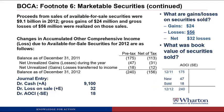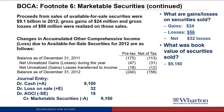Now that we have the debit to AOCI, we are only missing one thing — the book value of the marketable securities sold. We can plug that credit as 9,150. So that's the book value of the securities they sold.